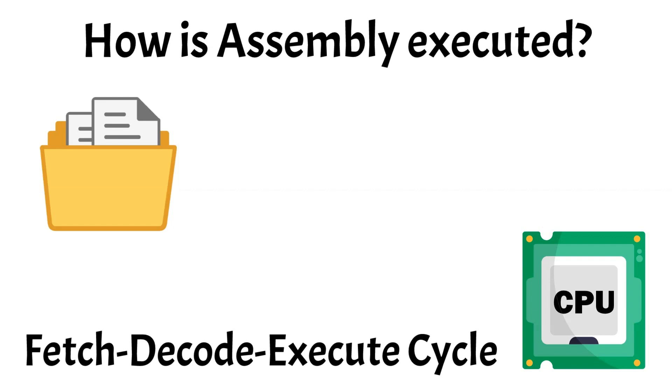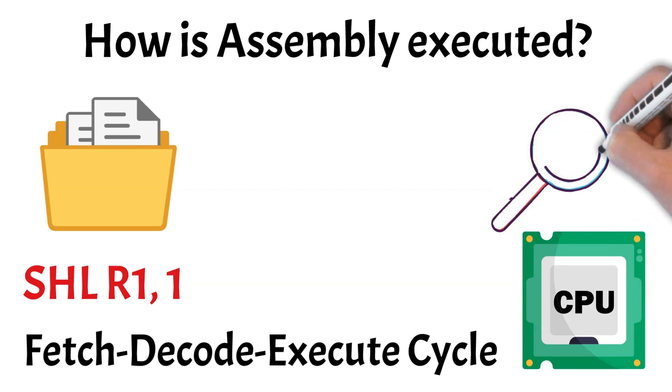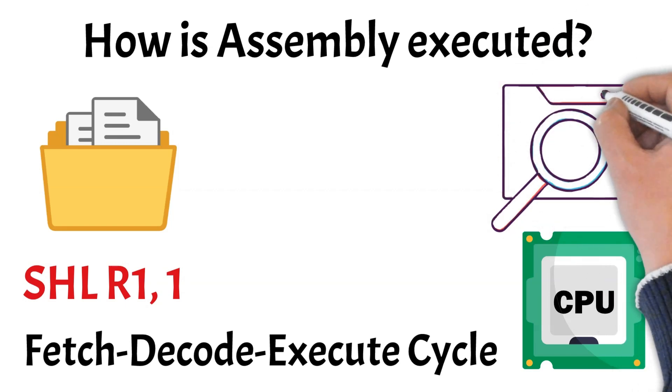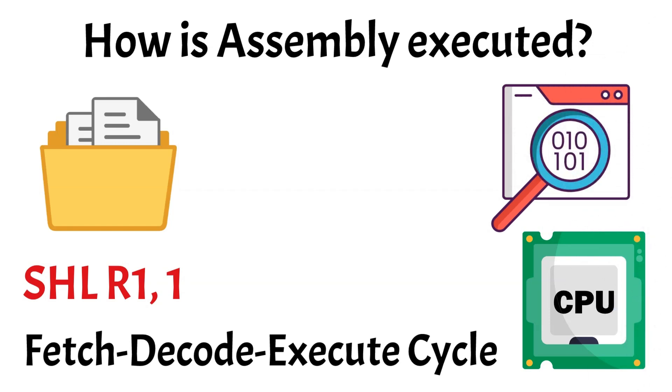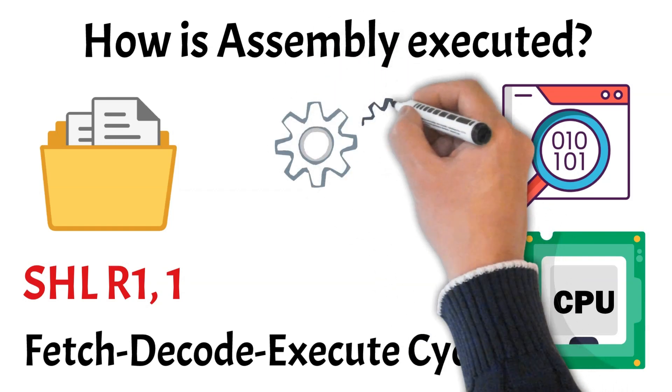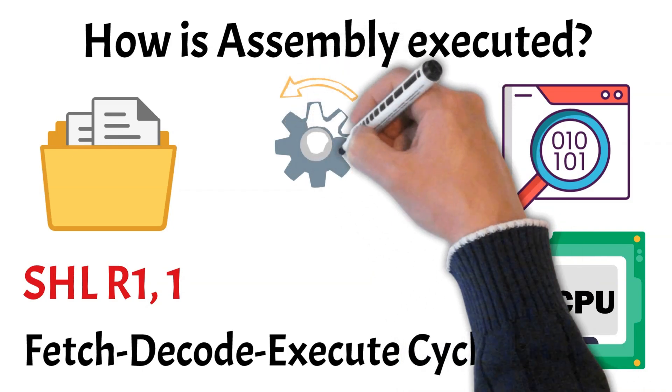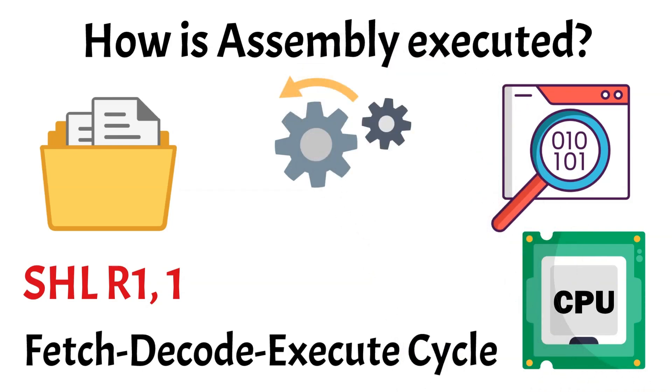For instance, if the instruction is shift left R1, the CPU fetches this command from memory. In the decode phase, the CPU interprets the fetched instruction, determining what action is required and identifying the involved operands, such as recognizing that it needs to shift the bits in R1 to the left by one position. Finally, in the execute phase, the CPU carries out the operation as specified by the instruction. In our example, it shifts the bits of R1 left, effectively multiplying the value by 2.